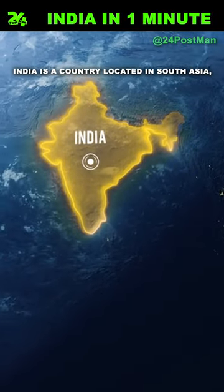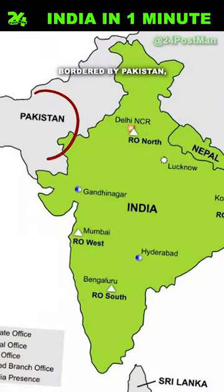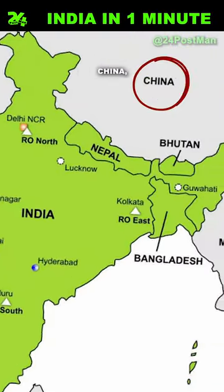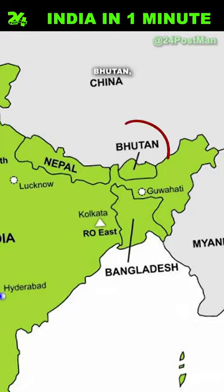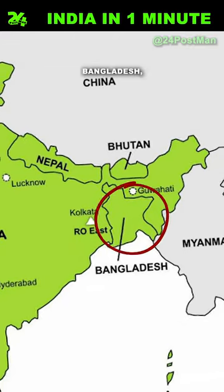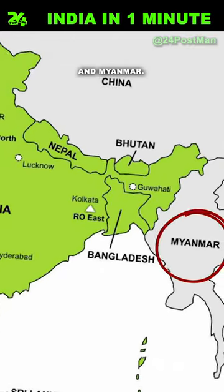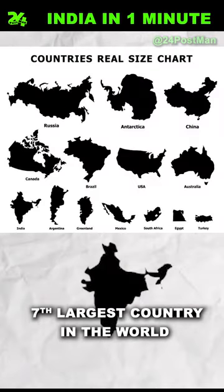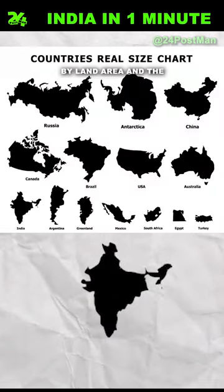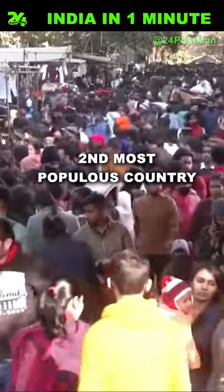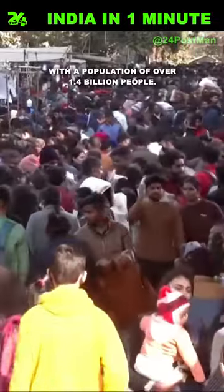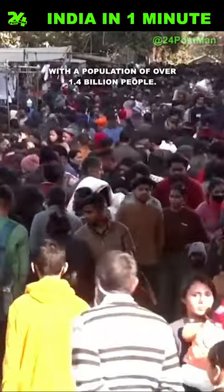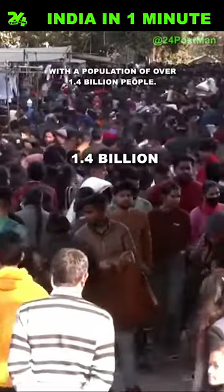India is a country located in South Asia, bordered by Pakistan, China, Nepal, Bhutan, Bangladesh, and Myanmar. It is the seventh largest country in the world by land area and the second most populous country, with a population of over 1.4 billion people.